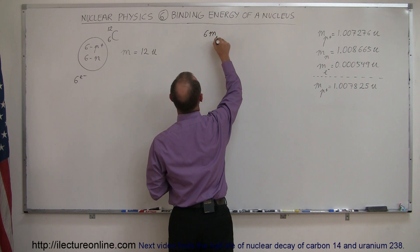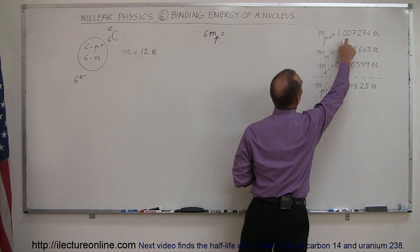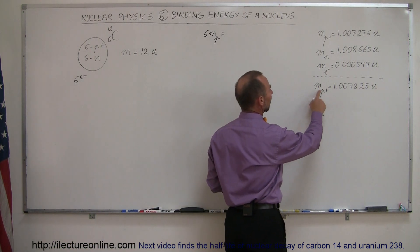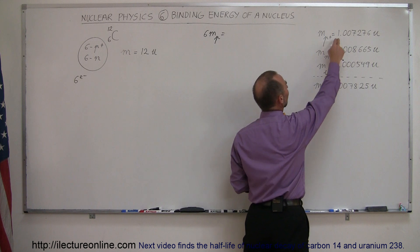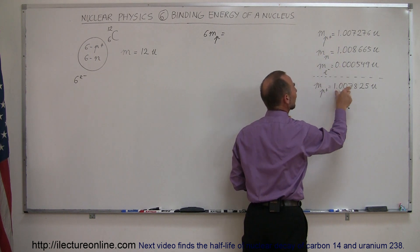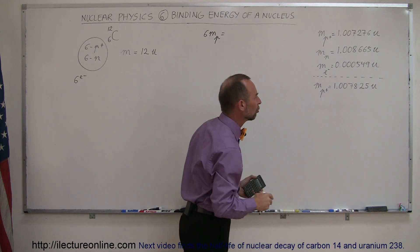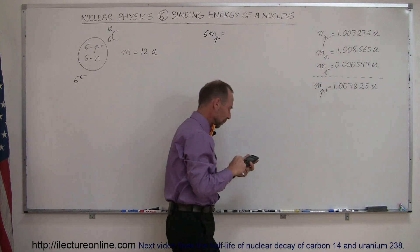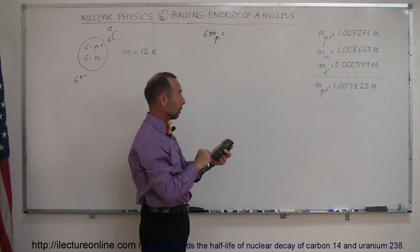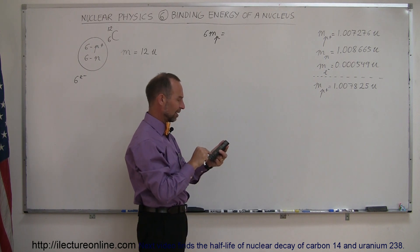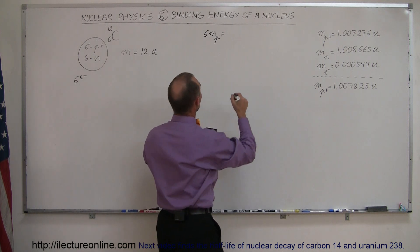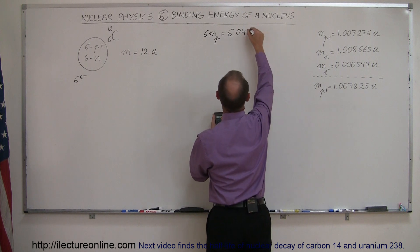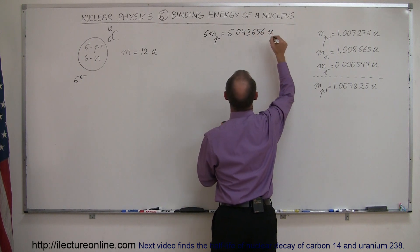So six times the mass of a proton is equal to six times this quantity right there. And in case you're wondering that I have another mass for the proton over here, but that's really when you add the mass of a proton and the mass of an electron together. We're going to do it separately. So six times the mass of the proton, 1.007276 times 6 equals, and that gives us 6.043656 atomic mass units.